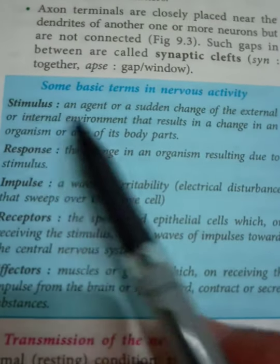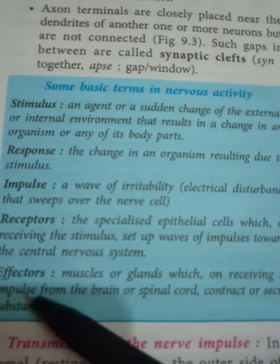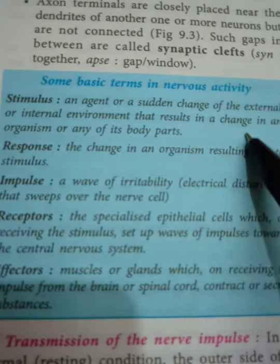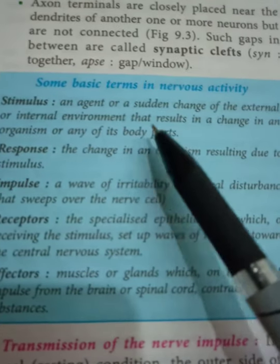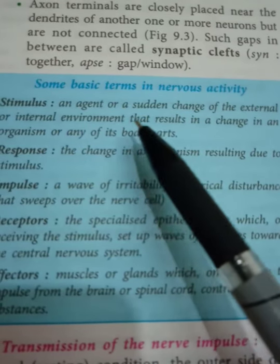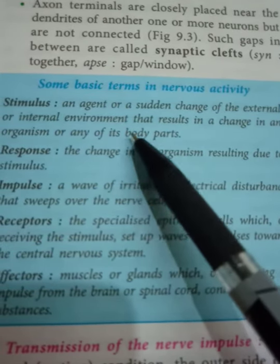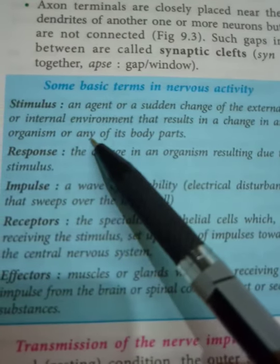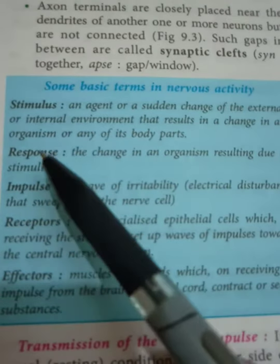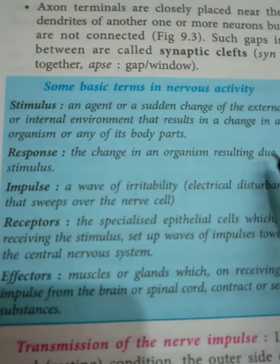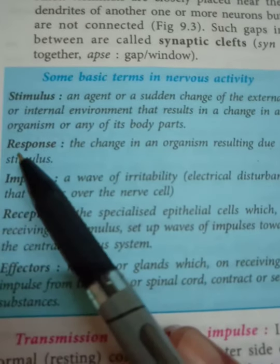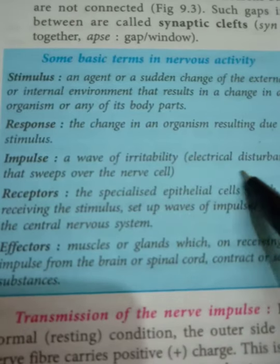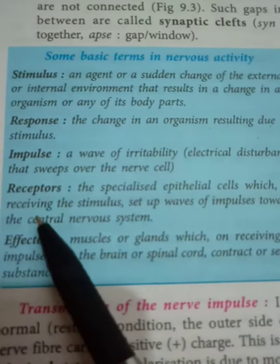Now some basic terms in nervous activity. Stimulus: an agent or a sudden change of the external or internal environment that results in a change in an organism or any part of the body — for example, seeing the teacher as you enter the class, or feeling hungry. Response: the change in an organism; for instance, entering the class is a response by stimulus. Impulse: a wave of irritability, that is, an electrical disturbance that sweeps over the nerve cell.